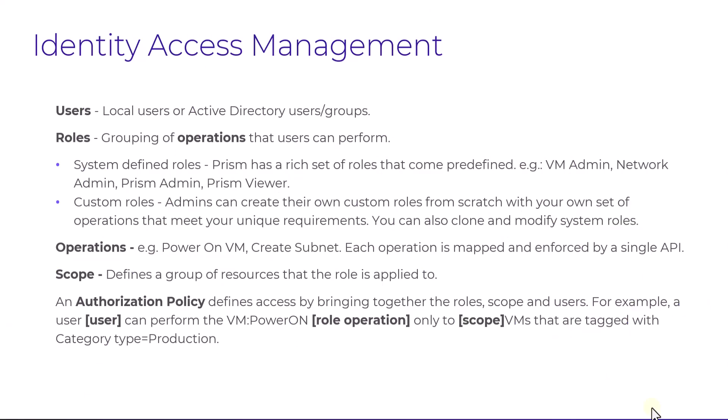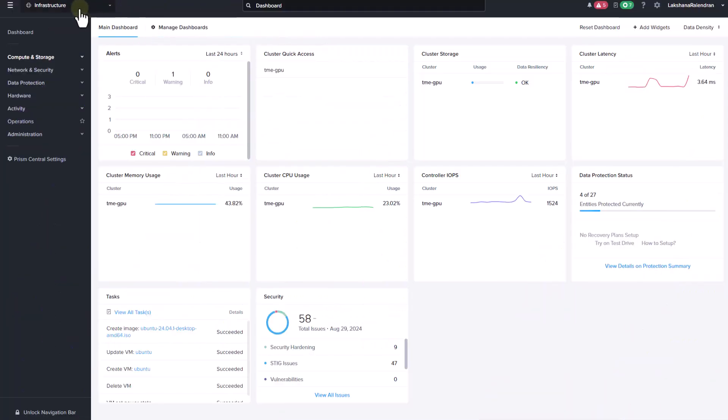Before we dive in, let's level set on some concepts. Users can be local users or Active Directory users or groups. Roles define a group of operations — there are hundreds of operations across services to choose from, and each operation is mapped and enforced by a single API. There are several out-of-the-box system-defined roles, and admins can also create their own custom roles. By defining scope, roles can be applied to a specific group of resources. Finally, an authorization policy defines the access by bringing together all of the above concepts.